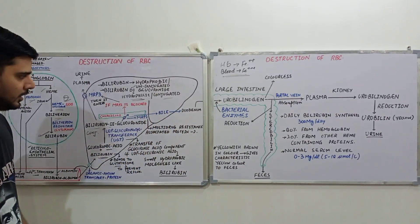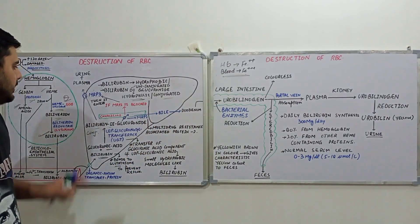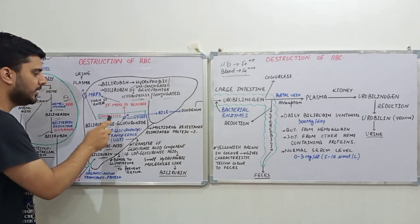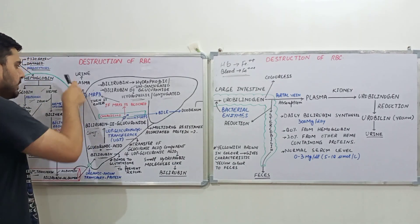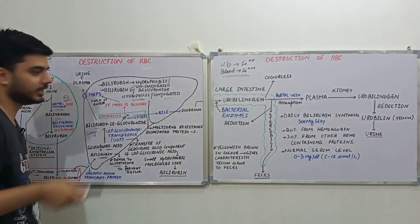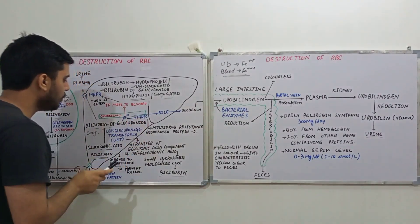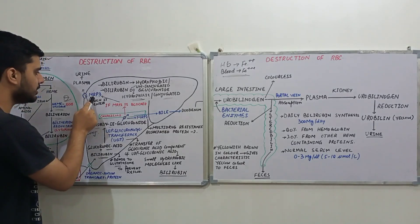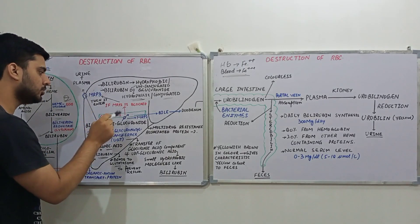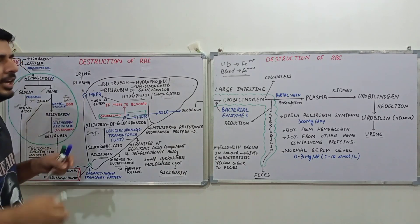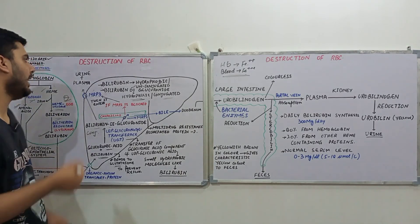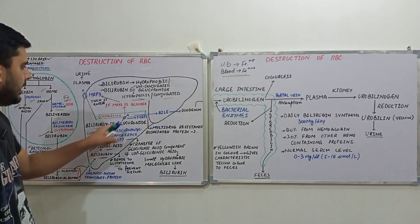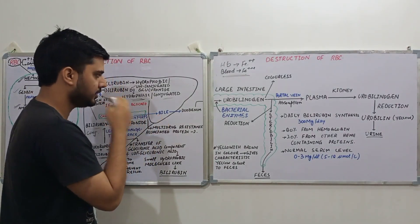Within the bile canaliculi, bilirubin diglucuronide is transported along with bile into the duodenum. An important point: if MRP2 is blocked, bilirubin diglucuronide is instead transported into the plasma via MRP3. So MRP2 transports bilirubin diglucuronide into the bile canaliculi, while MRP3 transports it into the plasma, from where it reaches the kidneys for filtration and is released in the urine.